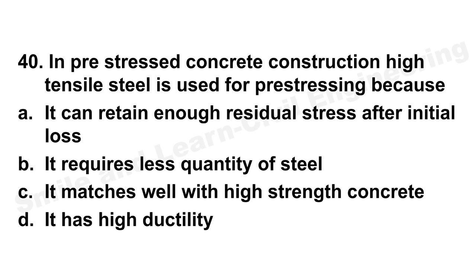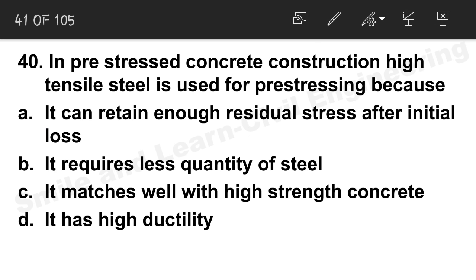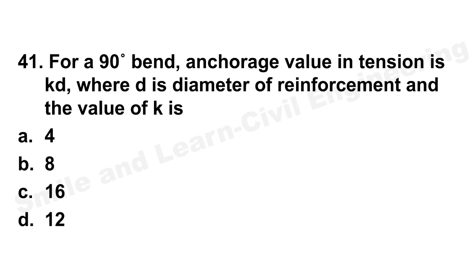Question 40: In pre-stressed concrete construction, high-strength high-tensile steel is used for pre-stressing because it can retain enough residual stress after initial losses. Option A is the correct answer. It is not because of less quantity of steel or matching with high-strength concrete.